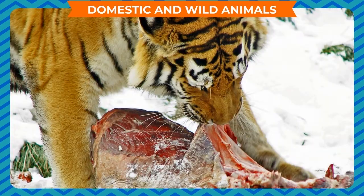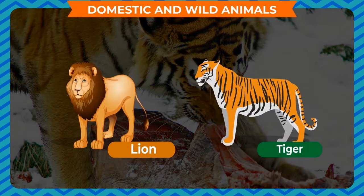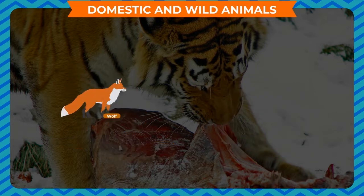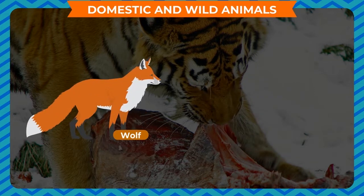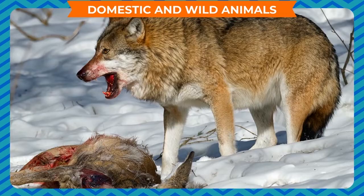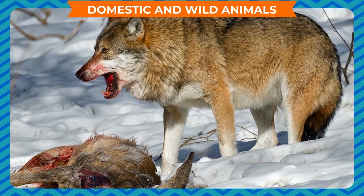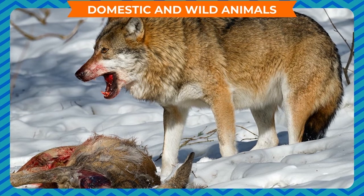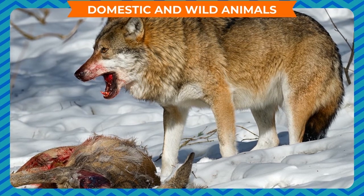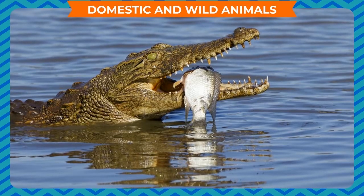Eating Habits. Some animals such as lion, tiger, wolf, crocodile, etc. hunt other animals and eat their flesh. These are called carnivores.